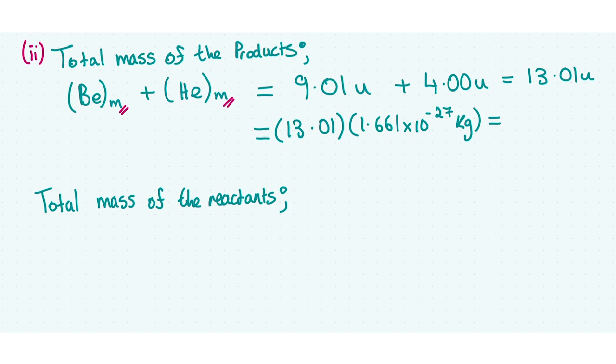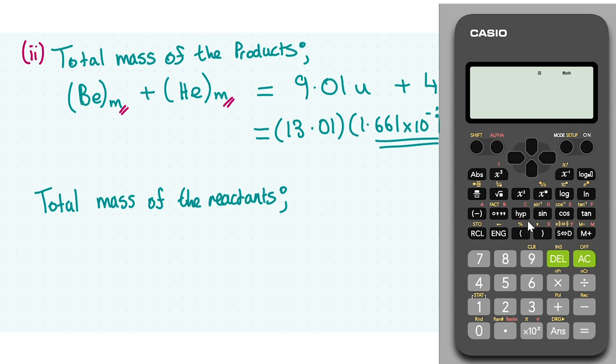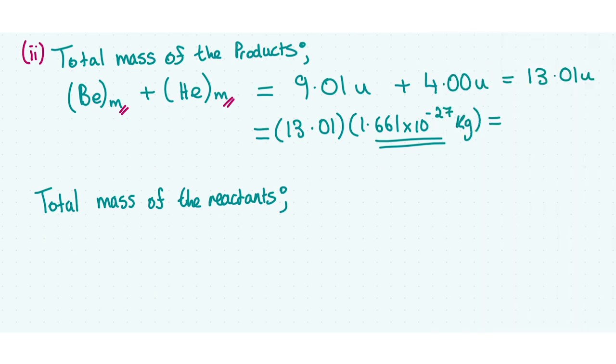We're going to get our calculator and we have 13.01 times 1.661 times 10 to the power of minus 27. When you're using scientific notation, it's best to use brackets instead of this multiplication symbol. We get a value which I will round, and we get that the total mass of the products is 2.161 times 10 to the power of minus 26 kilograms.